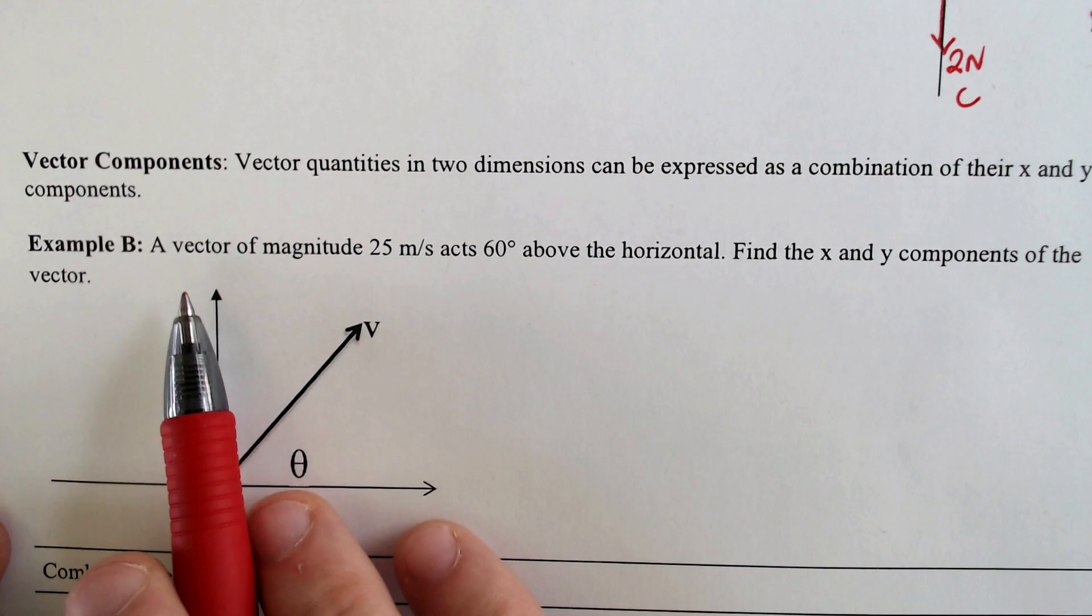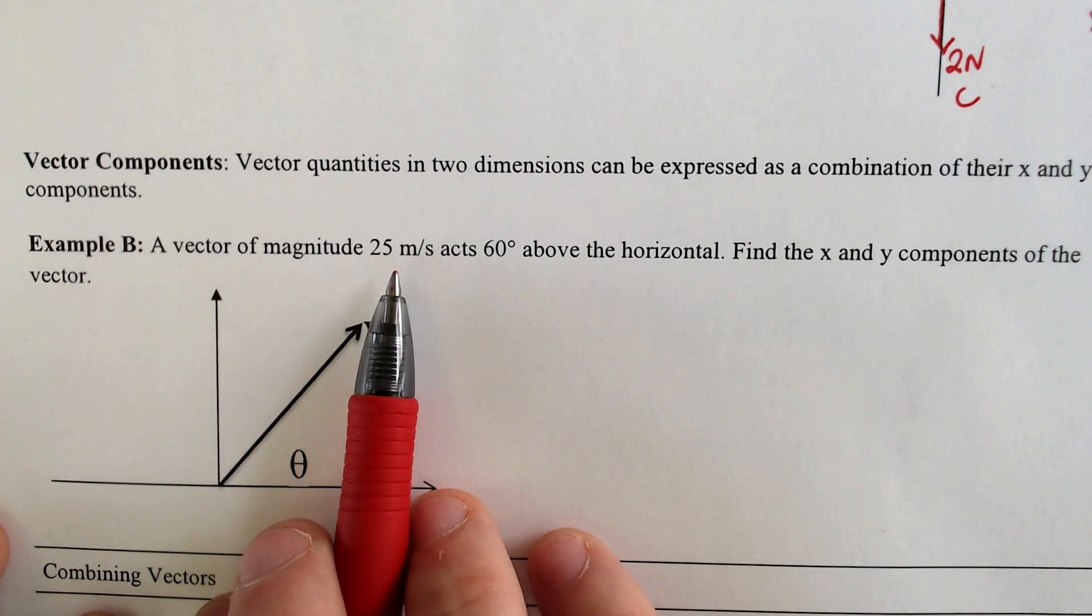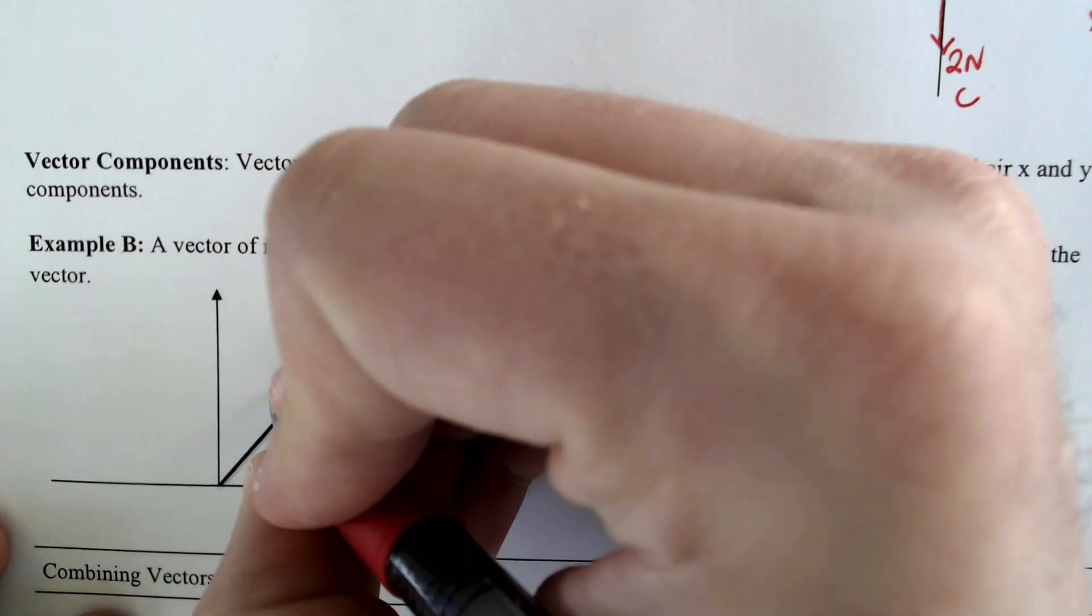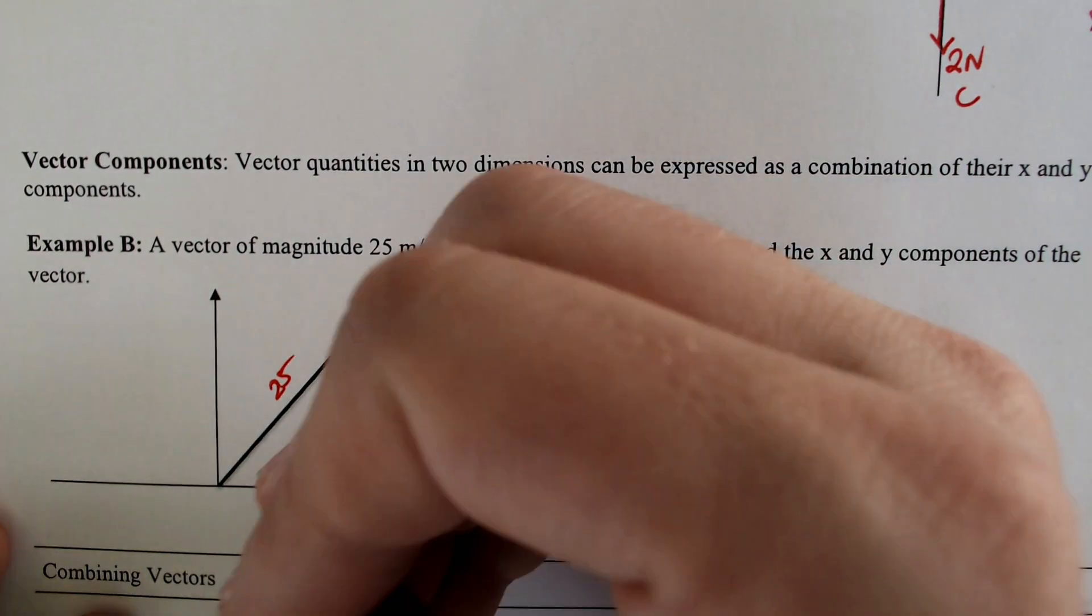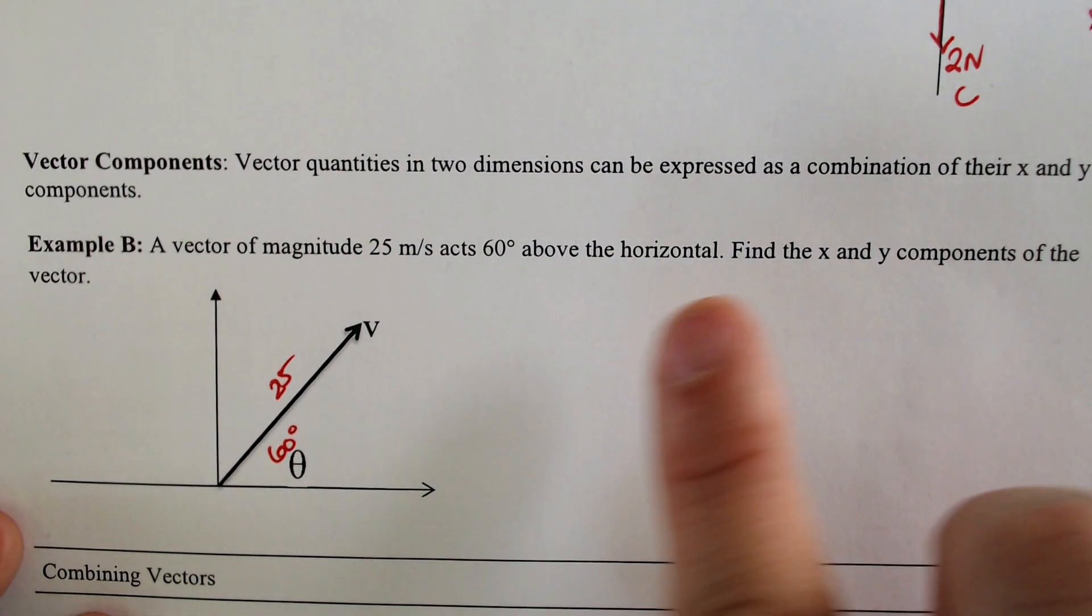So here we have a vector that has a magnitude of 25 meters per second, and it has 60 degrees above the horizontal. So the magnitude is 25, and it is 60 degrees above the horizontal. If we wanted to find the x component and the y component, you can create a right triangle.